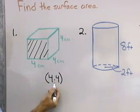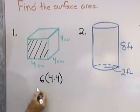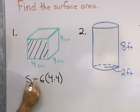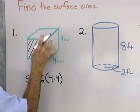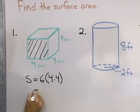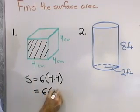So I'll take the area of each of the faces, multiply by the number of faces I have, and that will be the surface area for this geometric figure right here. So 6 times 16...